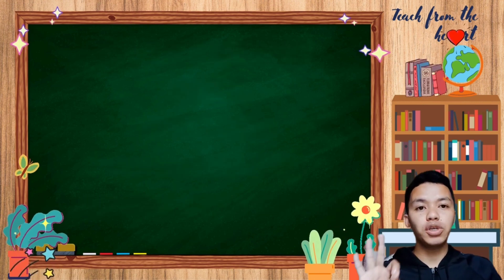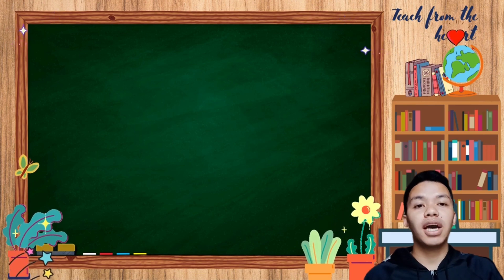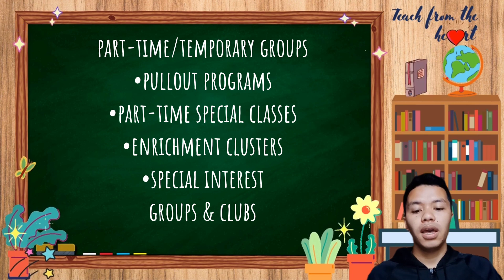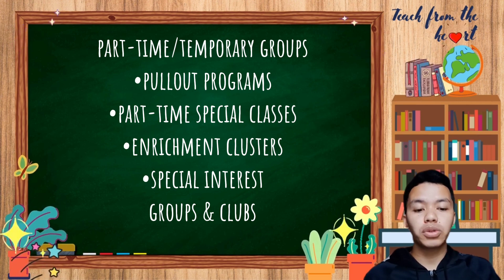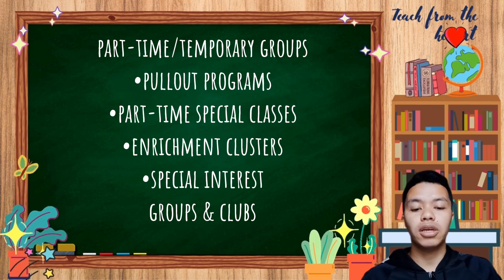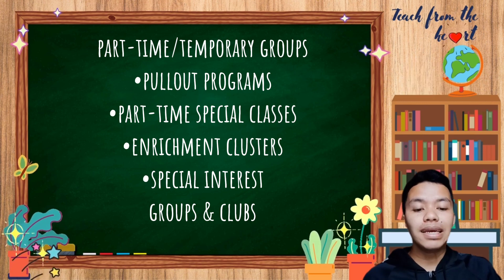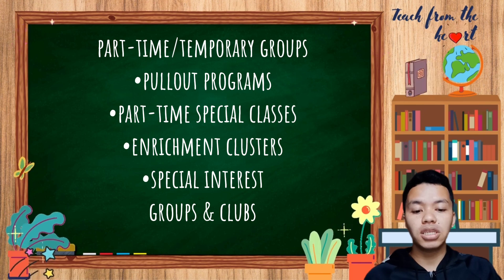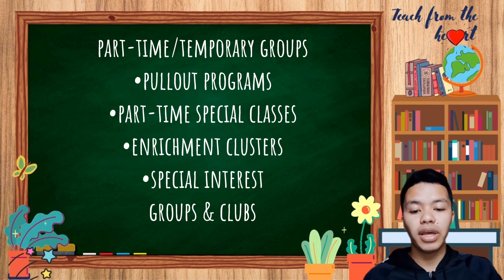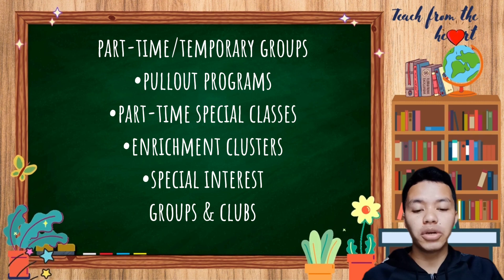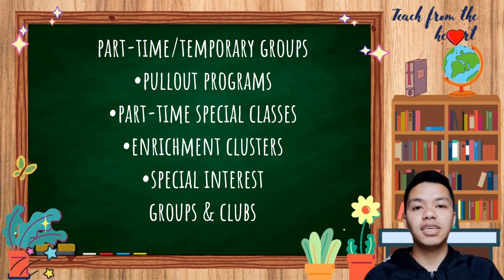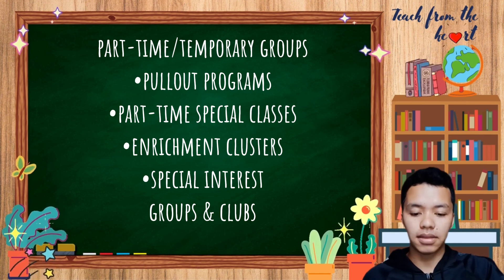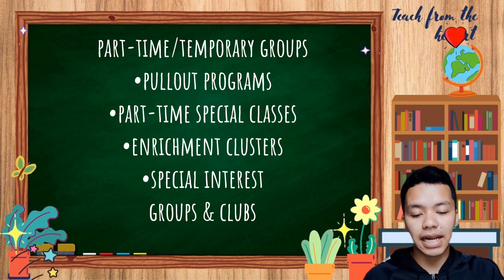The third grouping option is part-time or temporary groups. Pull-out programs involve students being pulled out of mainstream classes to participate in enrichment activities led by gifted and talented teachers. These sessions, usually held in a resource room, help students strengthen their creativity, metacognitive abilities, communication, and other personal areas of development.